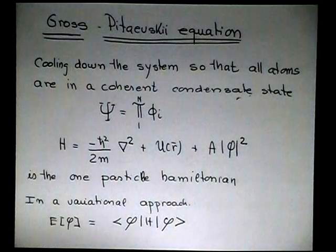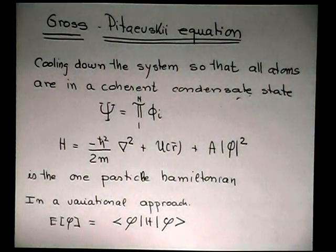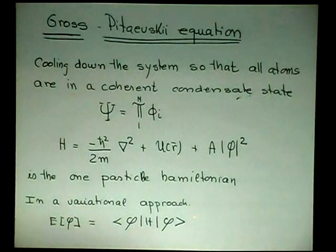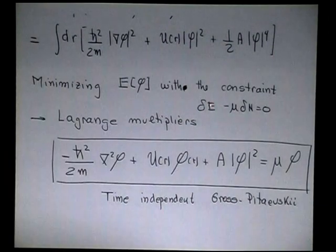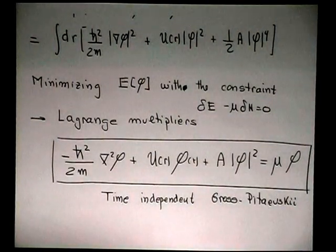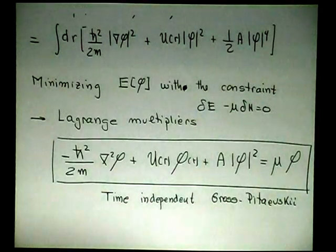But I want to solve it. I want to get this wave function. So I just take now this functional, and I minimize, but I cannot minimize in any sense. I have to minimize this with a constraint. And the constraint is that the total number of particles is in my system, and variations on the energy have to be related with variation in the number.